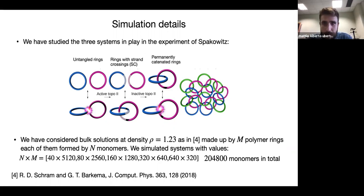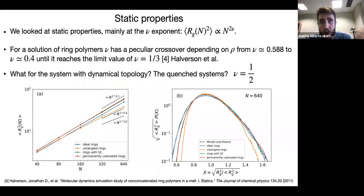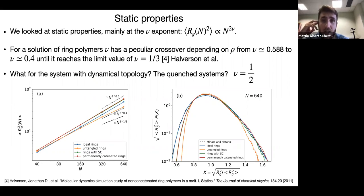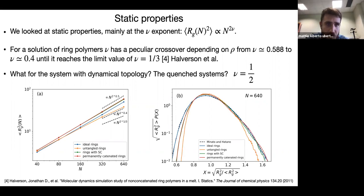The static properties were studied first, looking at the nu exponent, which is the universal exponent relating the degree of polymerization to the mean-square gyration radius. For the untangled uncatenated rings, this exponent is known to show a crossover from 0.588 (the self-avoiding walk result) toward nu = 1/3, passing through a regime of 0.4. The simulation recovered nu ≈ 0.4, confirming agreement with the benchmark for uncatenated rings.